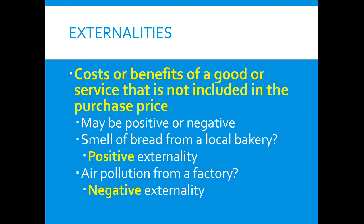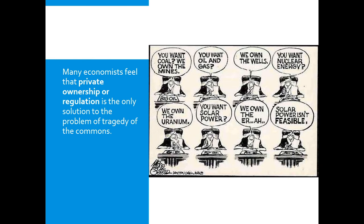If we have a common resource, people are going to overuse it because they get an individualistic benefit. Externalities are basically the costs or benefits of a good or service that are not included in the purchase price. For example, smelling bread from a local bakery is a positive externality — a benefit not included in the purchase price. A factory producing pollution is a negative externality — a cost not related to the price of the good or service.